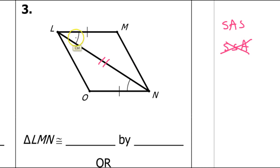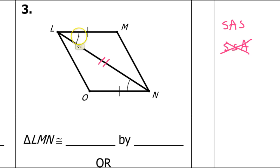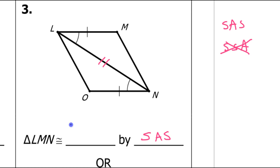And it is. If you look at these two sides, the angle is between the sides. If you look at these two sides, this angle is between the sides. So that makes this side-angle-side. Now, this is what many students will get wrong — the congruent statement. So be careful.